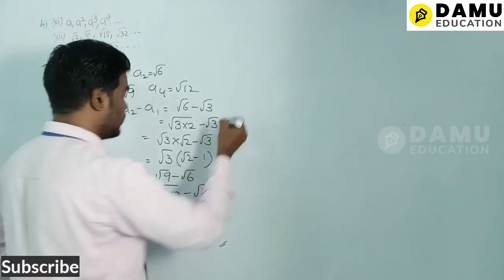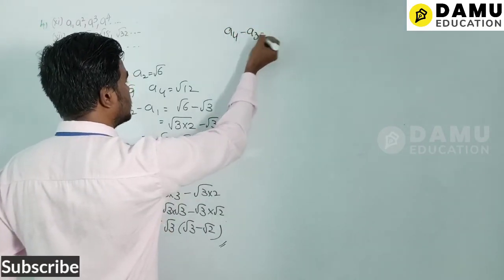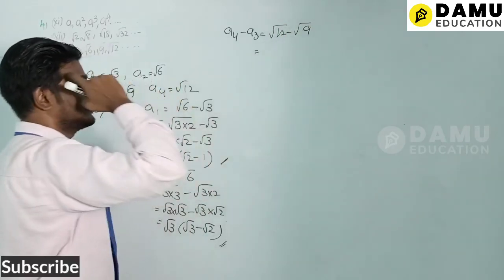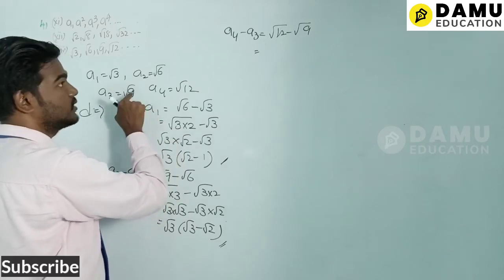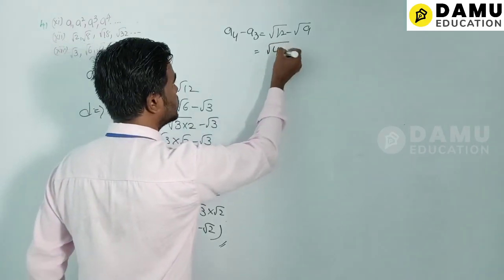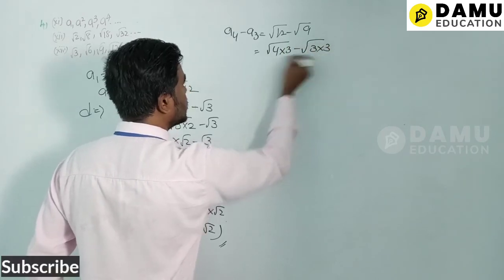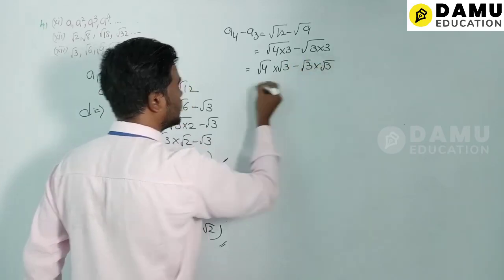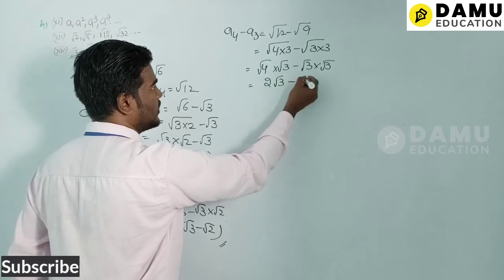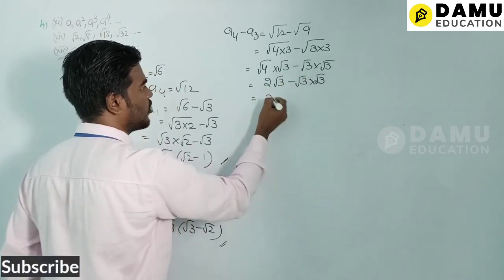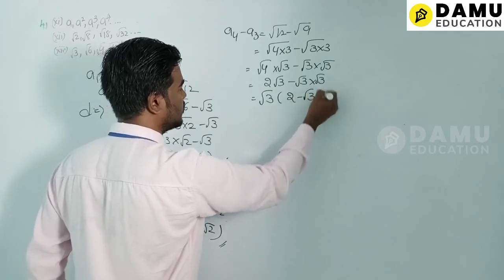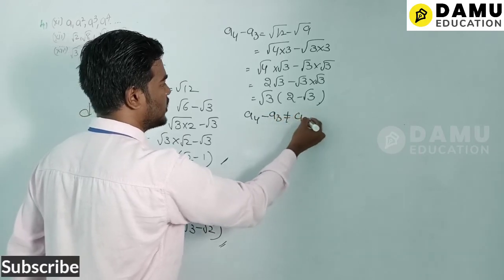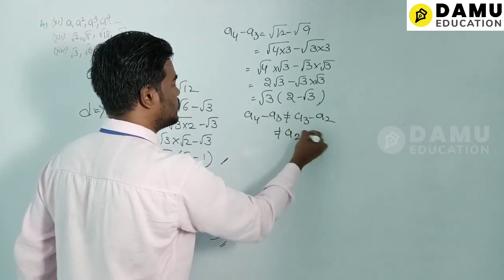Then a4 − a3 = √12 − √9 = √(4×3) − √(3×3) = 2√3 − √3 · √3. Taking √3 as common: √3(2 − √3). Since √3(√2−1) ≠ √3(√3−√2) ≠ √3(2−√3), the common difference is not the same.